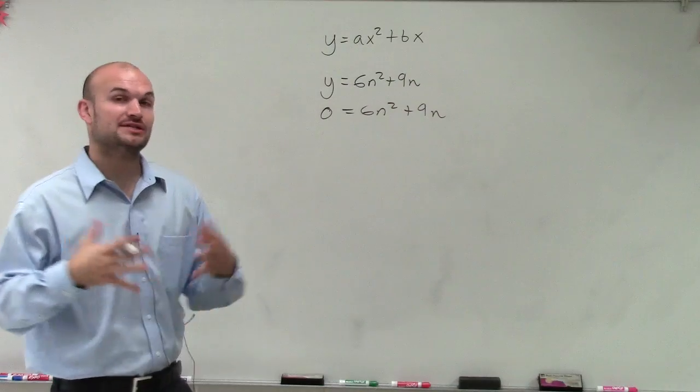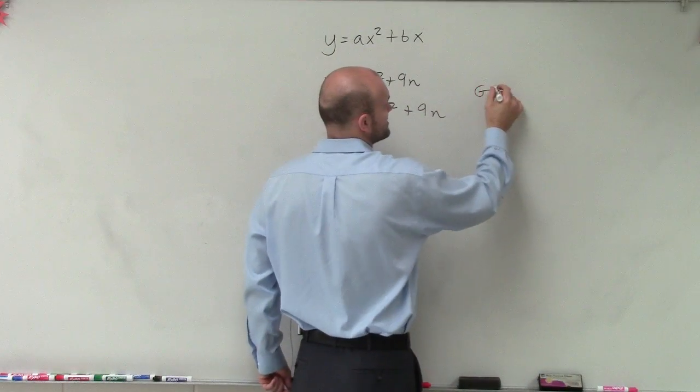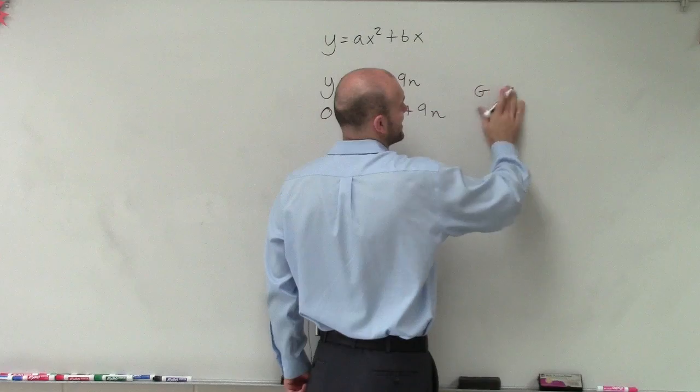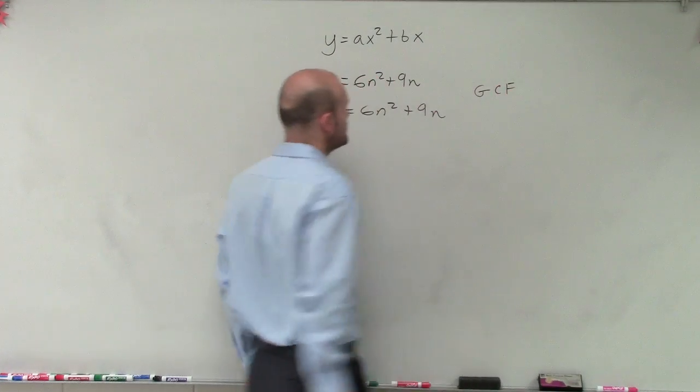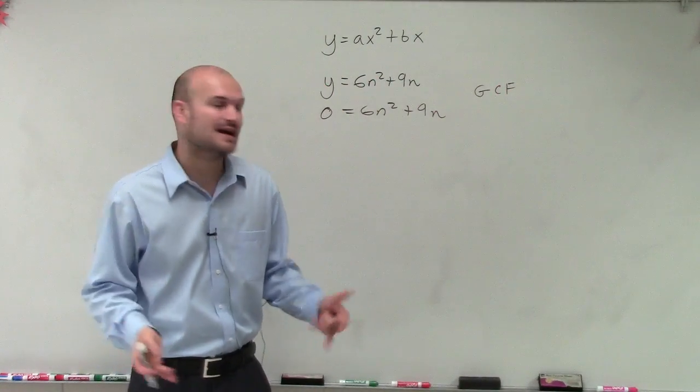So now what we're going to do is we need to factor this. A lot of times when factoring a problem like this, we always want to look for the greatest common factor. So we want to see what do 6n squared and 9n have in common.